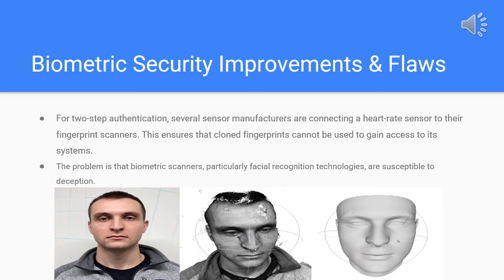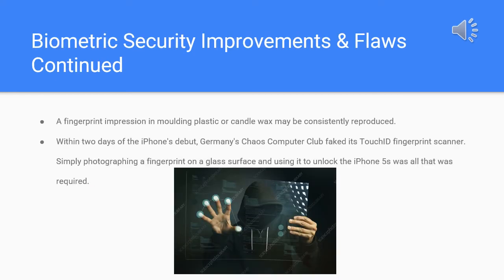With any sort of technology there are always ways to improve and it comes with its own flaws. For biometric security, they're starting to use two-step authentication — using two different types of biometrics — to make it more secure, though it can still be susceptible to deception. The most popular type nowadays is the fingerprint scanner, however examples of fingerprint cloning are everywhere. A fingerprint can be cloned reliably in about 40 minutes with ten dollars worth of material, simply by making a fingerprint impression in molding plastic or candle wax.